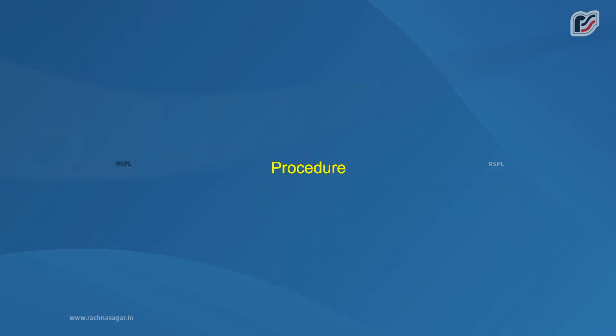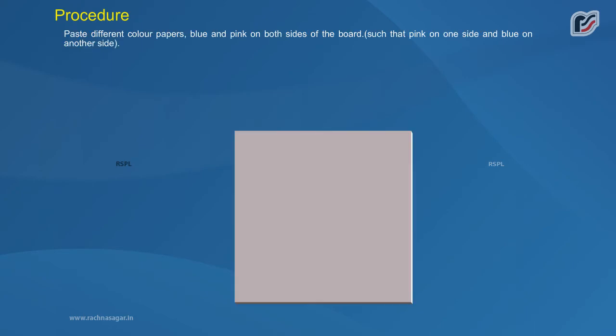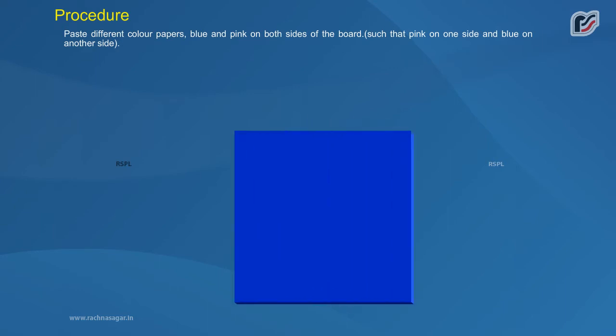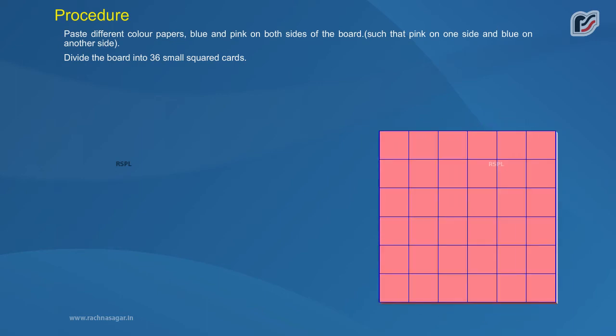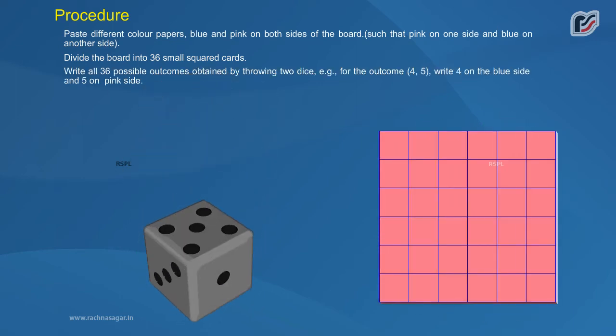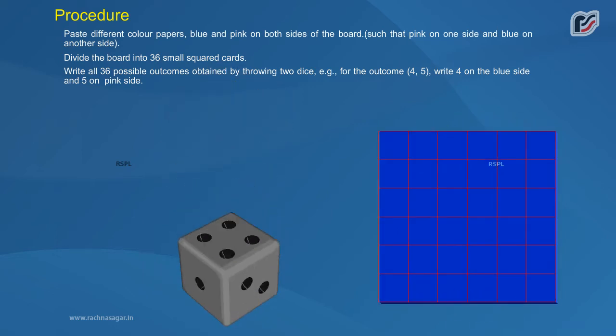Procedure: Paste different color papers blue and pink on both sides of the board such that pink on one side and blue on another side. Divide the board into 36 small squared cards. Write all 36 possible outcomes obtained by throwing two dice. For example, for the outcome 4-5, write 4 on the blue side and 5 on the pink side.